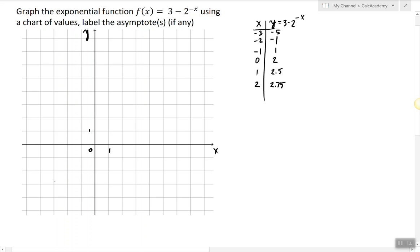So at negative 3 we have negative 5, at negative 2 we have negative 1, at negative 1 we have 1, at 0 we have 2, at 1 we have 2.5, 2 we have 2.75 and so on.